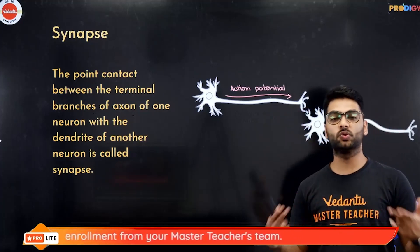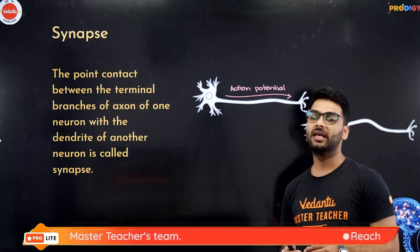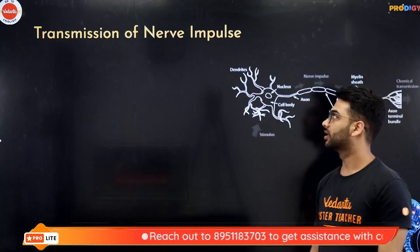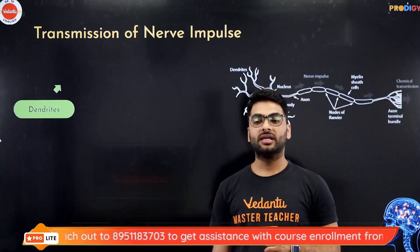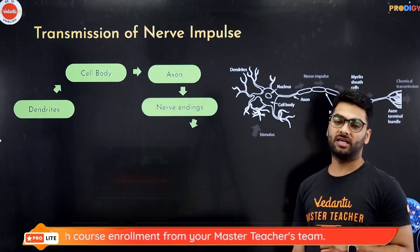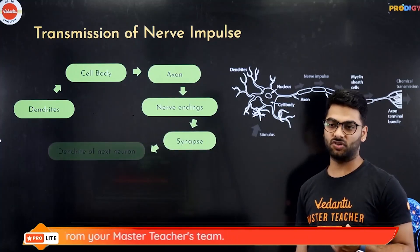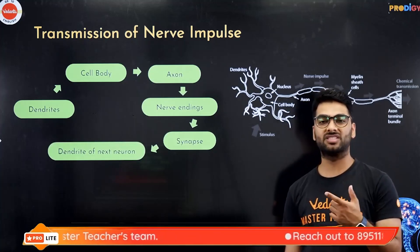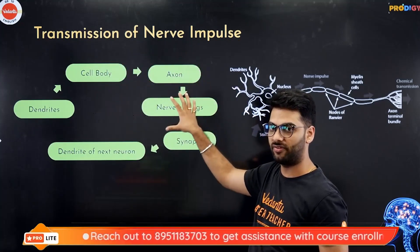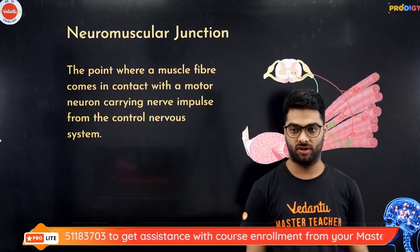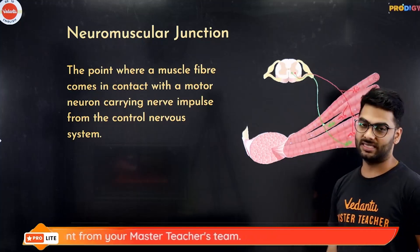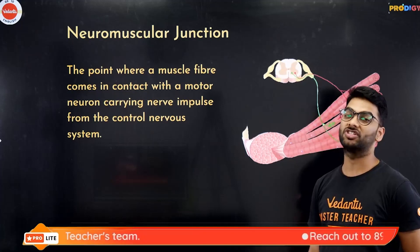The point of contact between two neurons is called the synapse. There is a slight gap between two neurons called the synaptic cleft. In terms of nerve impulse transmission: the dendrites receive the impulse, give it to the cytone, the cytone passes it through the axon, the axon gives it to the axon terminals or nerve endings, and it passes through the synapse to the dendrite of the next neuron. That is how an impulse travels from one neuron to the next. The point where a muscle fiber comes in contact with a motor neuron carrying nerve impulse from the central nervous system — it is the sensory neuron that receives the impulse and the motor neuron which reacts to it.